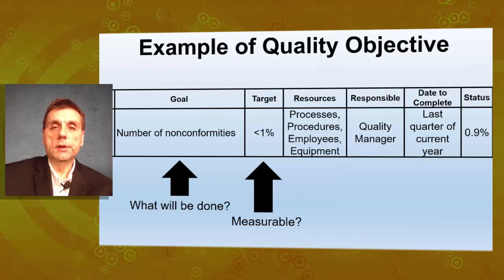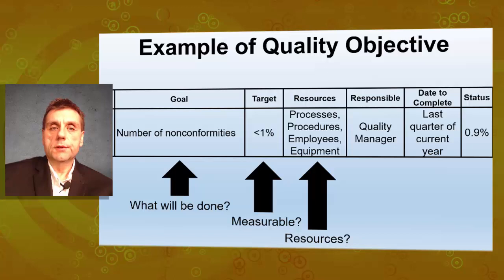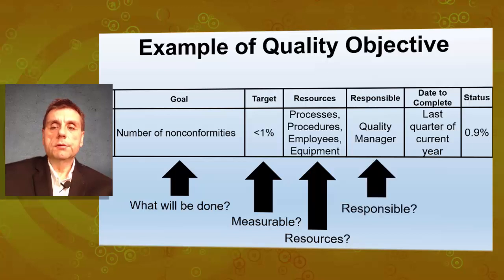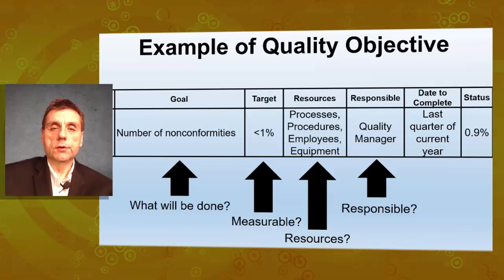What resources will be used to achieve this objective? Different processes, procedures, employees, equipment, and so on. Who will be responsible for this particular objective? In this case, it is the quality manager, because it concerns the number of nonconformities and is really the function of the quality department.